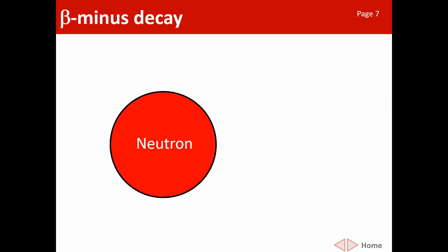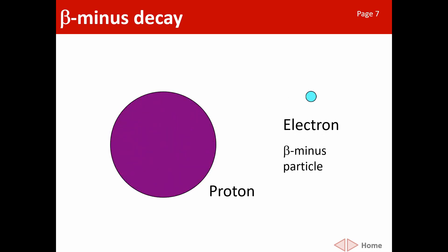Under certain circumstances, called beta minus decay, a neutron will change into a proton plus an electron, and that electron is ejected. Before that reaction there were no protons; afterwards there is a proton. To balance both sides of the equation we give the electron an atomic number of minus one, and we'll see what that means at a later stage.